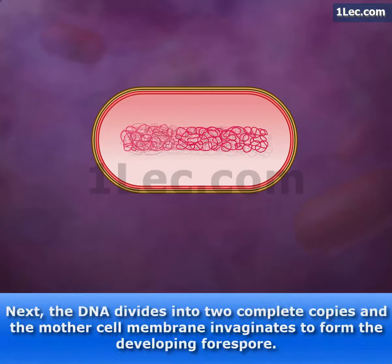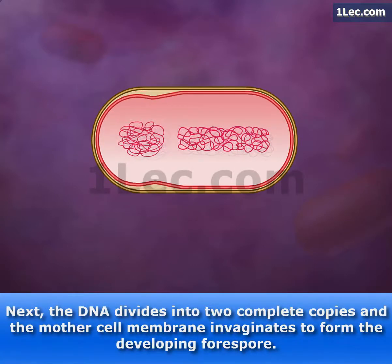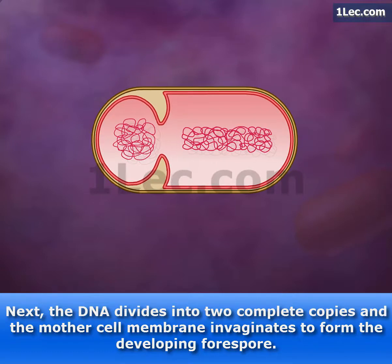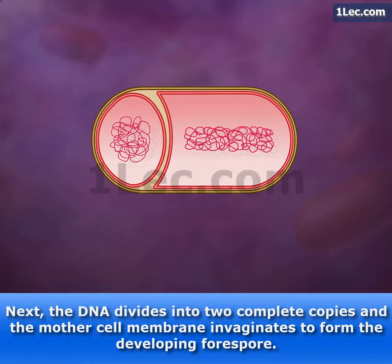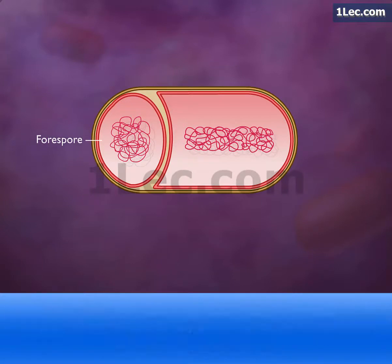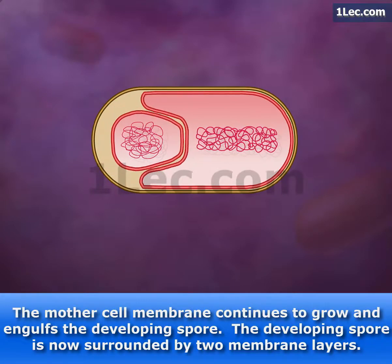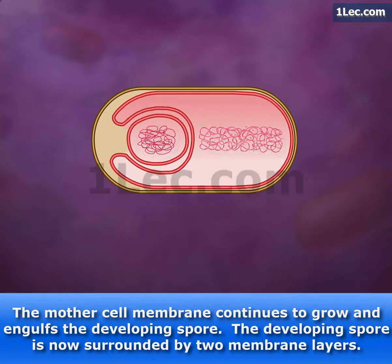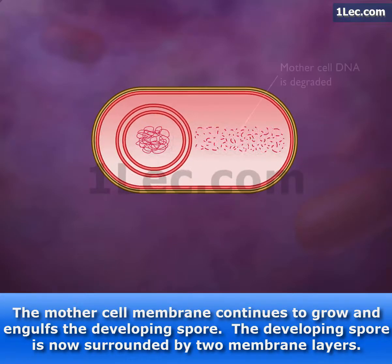Next, the DNA divides into two complete copies and the mother cell membrane invaginates to form the developing forespore. The mother cell membrane continues to grow and engulfs the developing spore. The developing spore is now surrounded by two membrane layers.